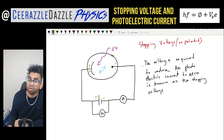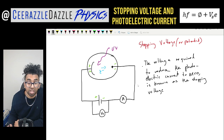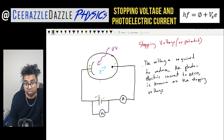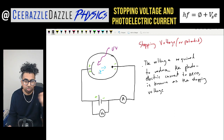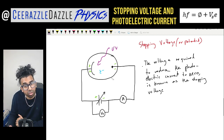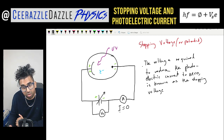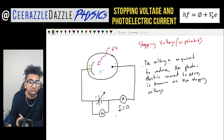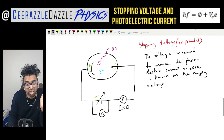The voltage required to reduce the photoelectric current to zero is known as the stopping voltage. You keep increasing this voltage until the electron stops moving and can't travel across the gap — at that point, the current goes to zero. So at the stopping voltage, I = 0 and current stops flowing around the circuit.